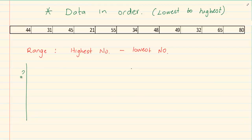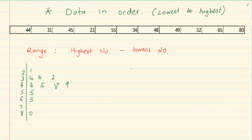If we look, we can see we are ranging between 20, 30, 40, 50, 60, 70 and 80. The values are 44, 31, 45, 21, 55, 34, 48, 49, 32, 65 and 80. Now the only ones that are not in order are in the 30s — we have 31, 34 and 32 — so we take out the 32 and put it in order. Remember, in your tree diagram the data must be in order.